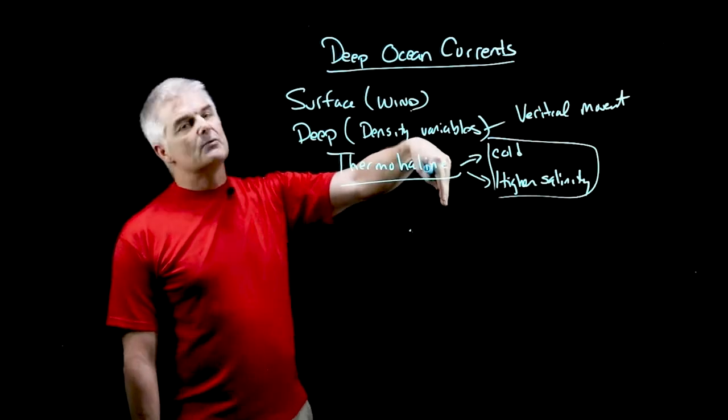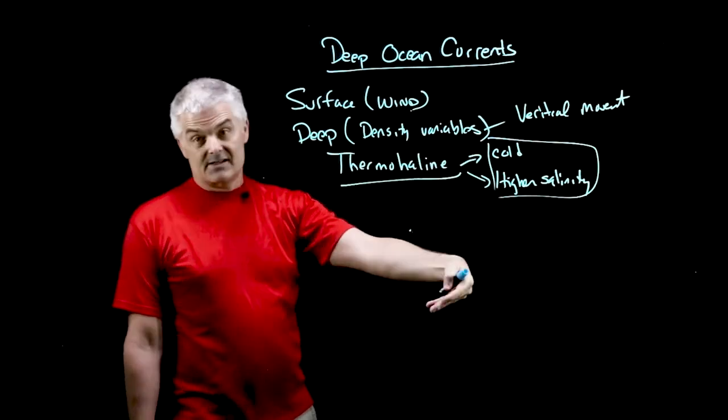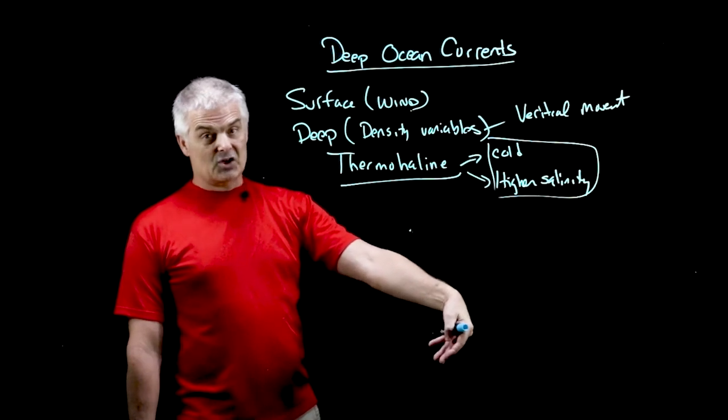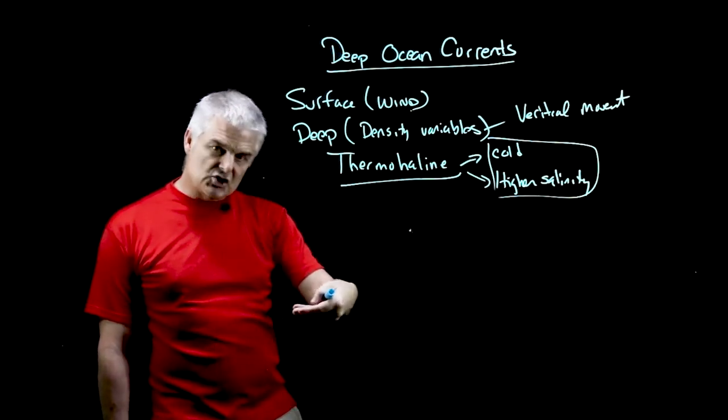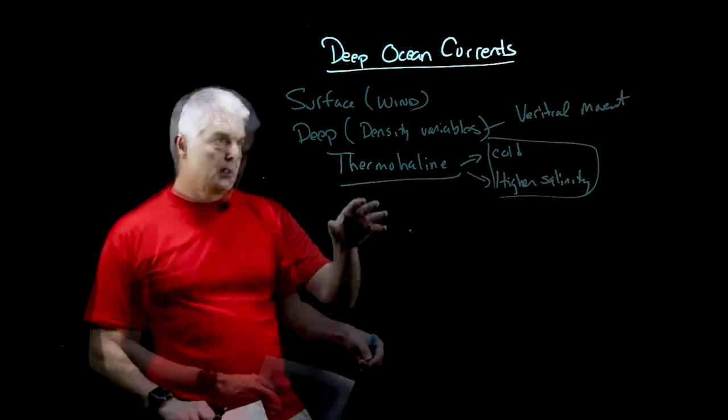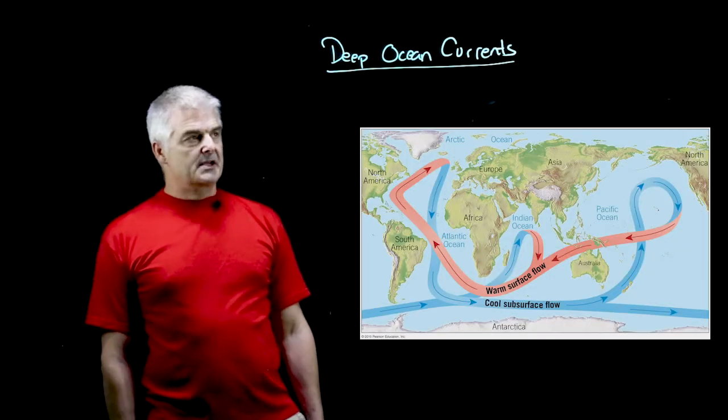So water descends in one place on the earth, and as it descends once it hits the bottom it has to go somewhere, and then under the bottom of the ocean these currents start to flow.